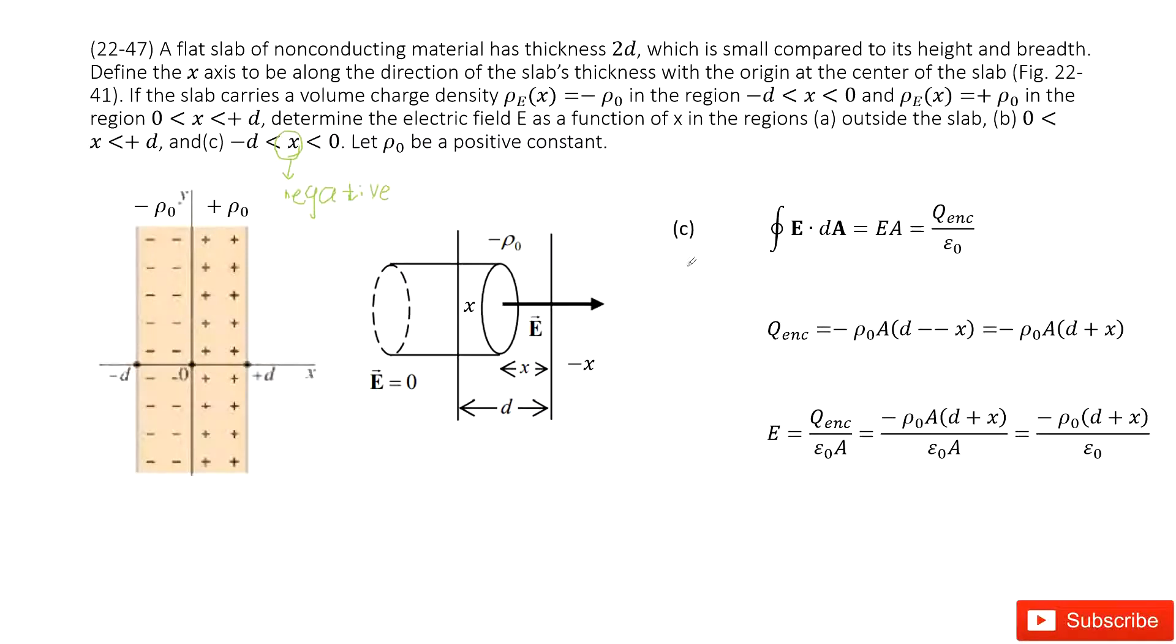We can see the electric field times the Gaussian surface. As we know, the outside electric field is 0, so the Gaussian surface is just this part. E times A equals enclosed charge divided by ε₀.